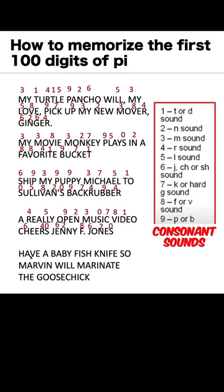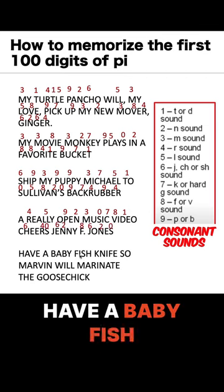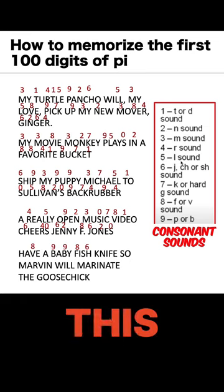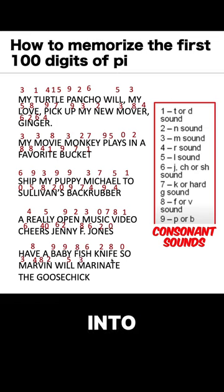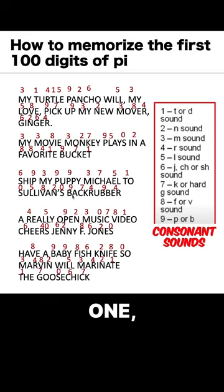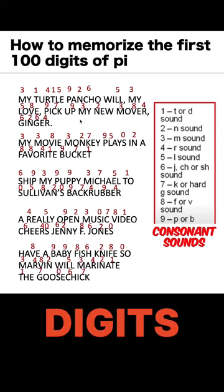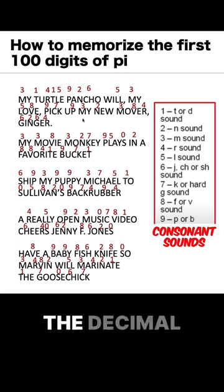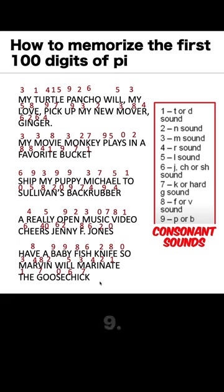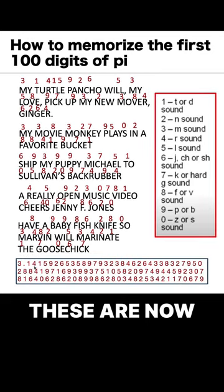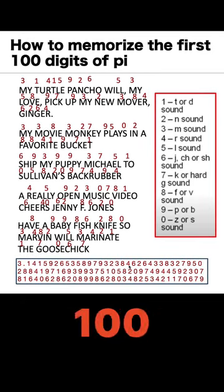And lastly, here is the last sentence: 'Have a baby fish knife, and we'll marinate the goose cheek.' And again, use this conversion table to convert into numbers. And when we did this one, we have here 100 digits, starting from 3 all the way up to 7. But if you want the 100 digits after the decimal point, the last digit here is 9. Summarizing all these numbers, these are now the first 100 digits of Pi.